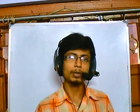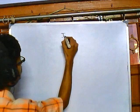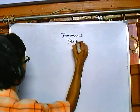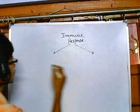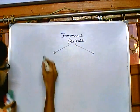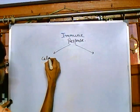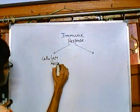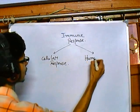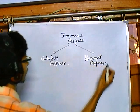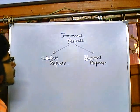In this particular video we'll be focusing on the complement system. The complement system is one of the major immune responses that our body can have against pathogens. The immune response can be divided into two parts: one is called cell-mediated or cellular response, and another one is called humoral response.